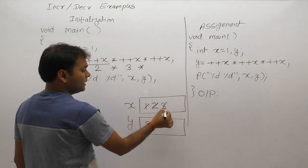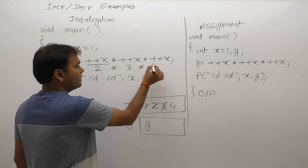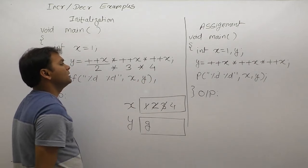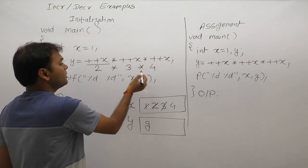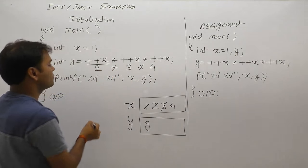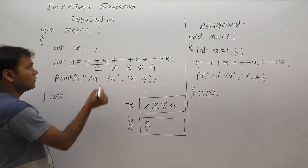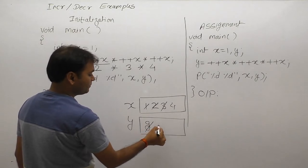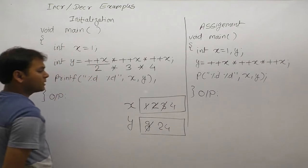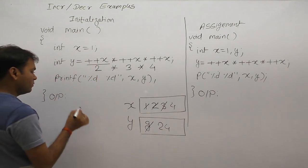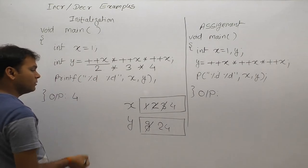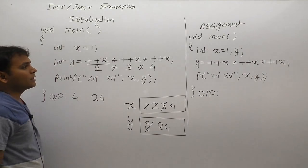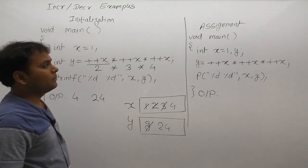Again pahle increment then replacement. The final result of that expression is 4 multiply by 3 is 12, multiply by 2 is 24. So 24 is assigned to the variable y. Now x got 4 and y got 24.